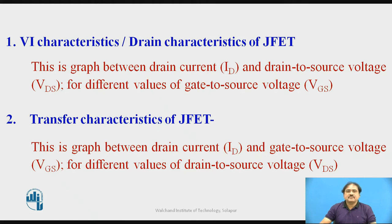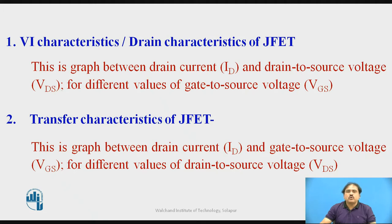Now we go deeper into the transfer characteristics of a JFET, which is a graph between the output current flowing in the drain and the input voltage supplied from gate to source, that is voltage VGS. In this kind of graph, the voltage from drain to source is kept constant.